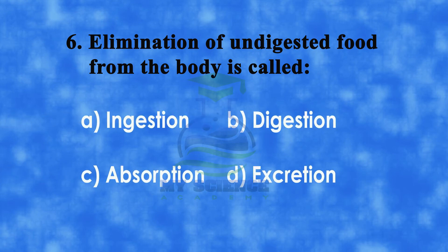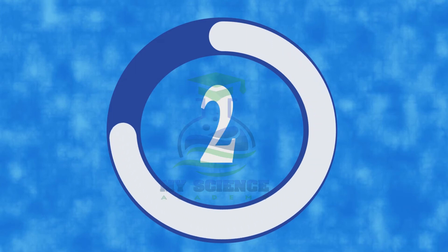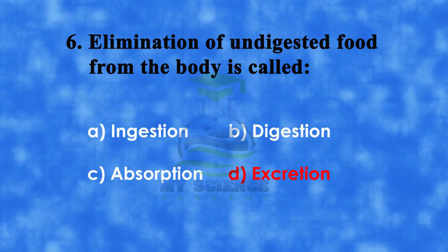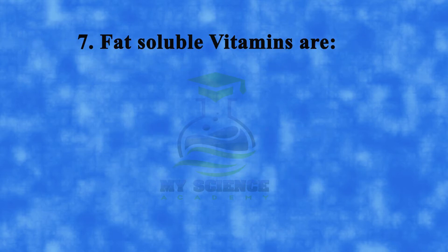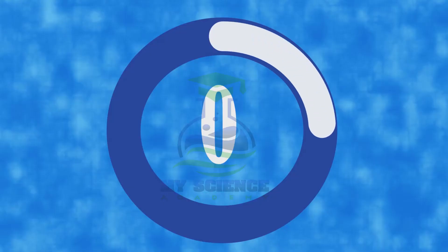Question number six: elimination of undigested food from the body is called — a) ingestion, b) digestion, c) absorption, or d) excretion. The correct answer is d) excretion. Question number seven: fat-soluble vitamins are — a) A, B, C, D; b) A, D, E, K; c) A, C, E, K; or d) B, C, E, D.